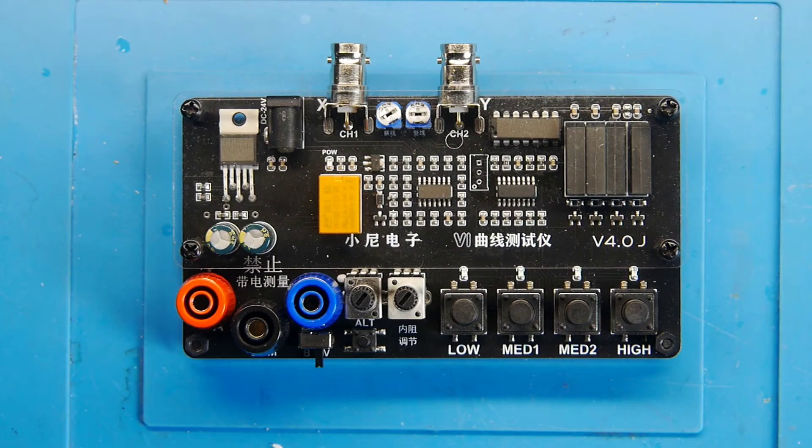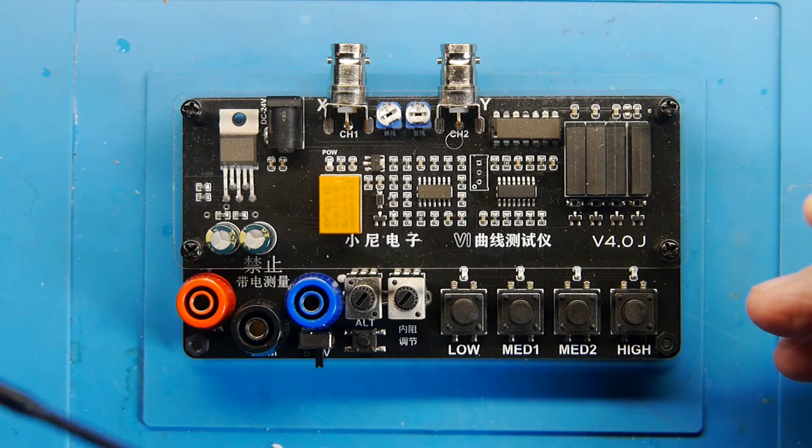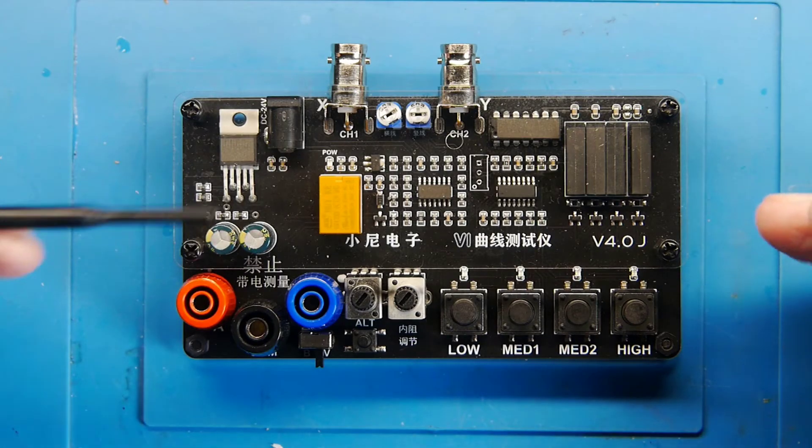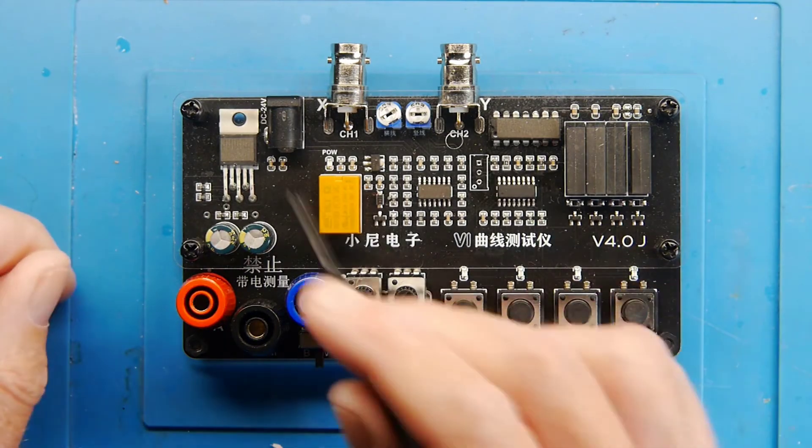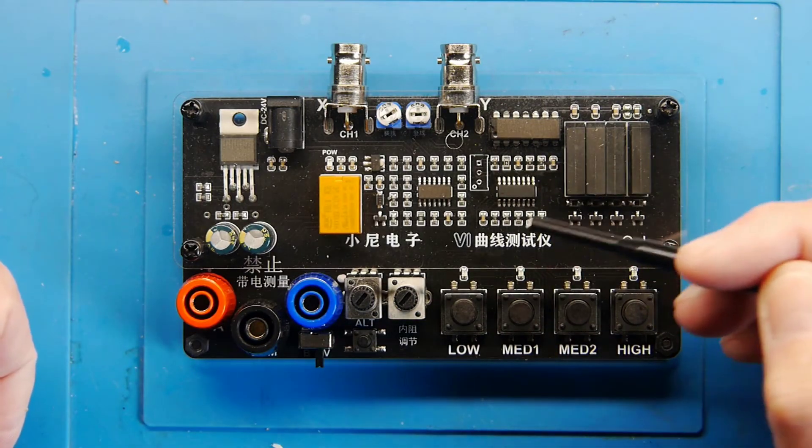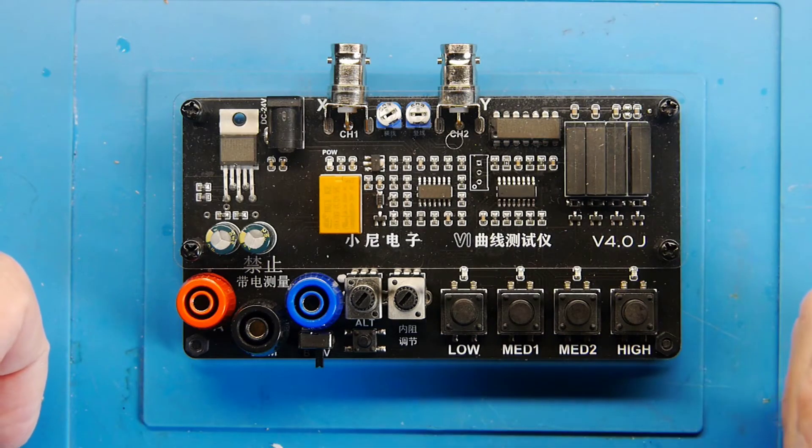If you're a regular viewer of the channel you may recall seeing this device which is a curve tracer I bought from Banggood. It was on two or three videos back, I can't remember exactly when but I will put a link up the top for you. I was amused at the time that the semiconductors, most of them have had their identification numbers etched off them.